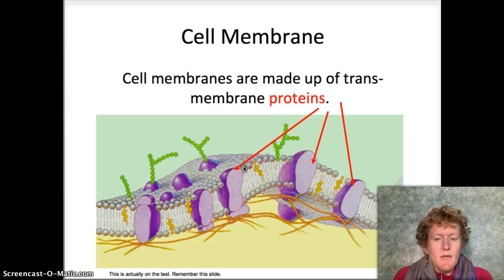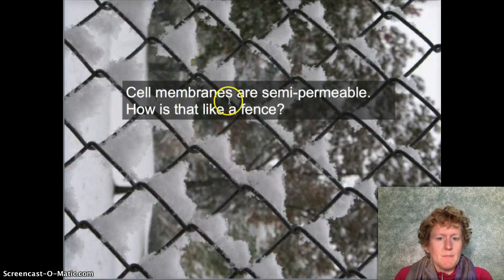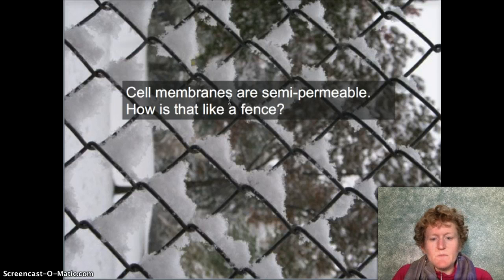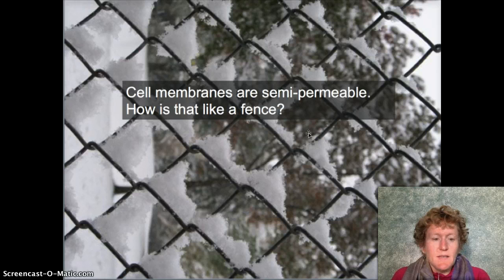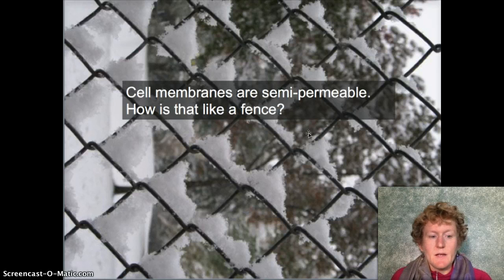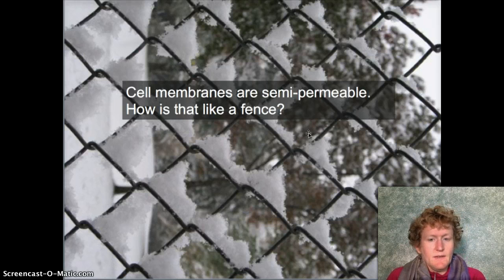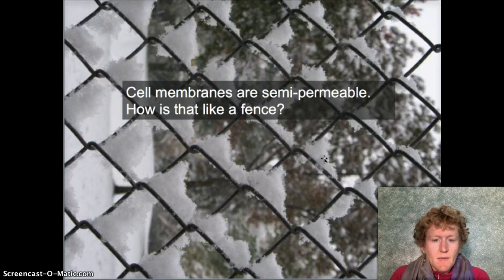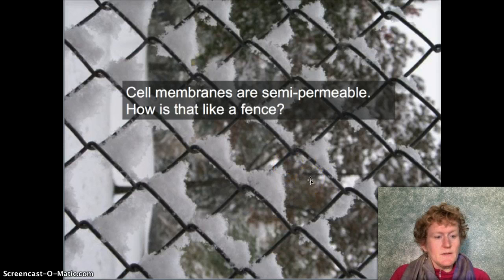Let's talk about cells as semi-permeable membranes — they're kind of like a fence. Fences let small things like air, water, snow, insects, and mice cross, but bigger objects like raccoons, deer, cats, and dogs can't get into my backyard because the fence keeps them out. It doesn't keep mosquitoes out, but it does keep raccoons out.